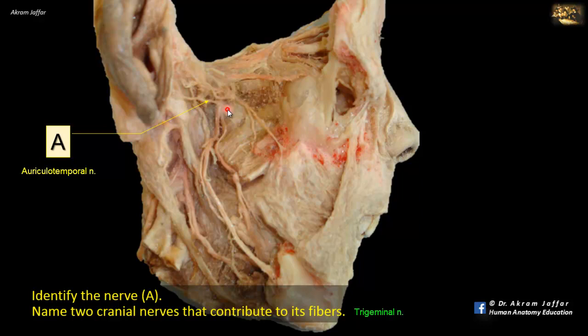The otic ganglion is a parasympathetic ganglion that receives preganglionic fibers from the lesser petrosal nerve. The postganglionic fibers accompany the auriculotemporal nerve and are distributed to the parotid gland as the nerve passes through it — these fibers are secretomotor for the parotid gland. The preganglionic fibers arrive from the lesser petrosal nerve, which is derived from the tympanic plexus in the middle ear. This plexus is derived from the glossopharyngeal nerve, making it the second cranial nerve that contributes to the fibers of the auriculotemporal nerve.